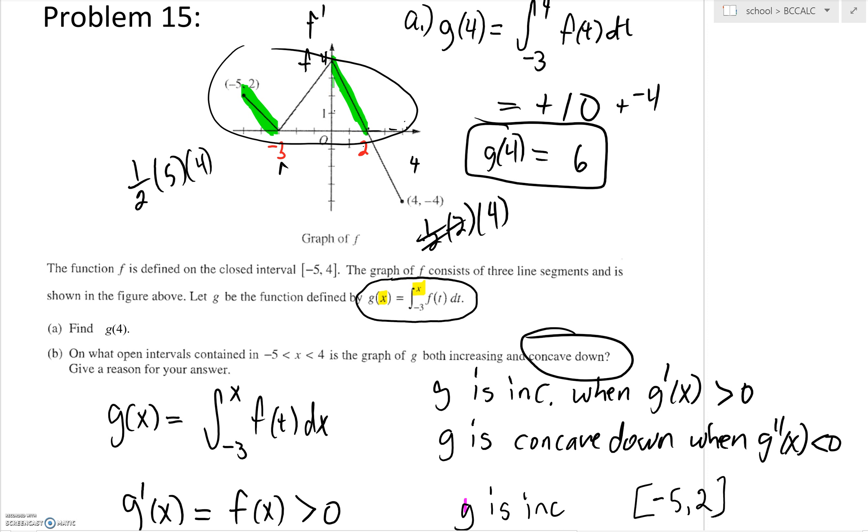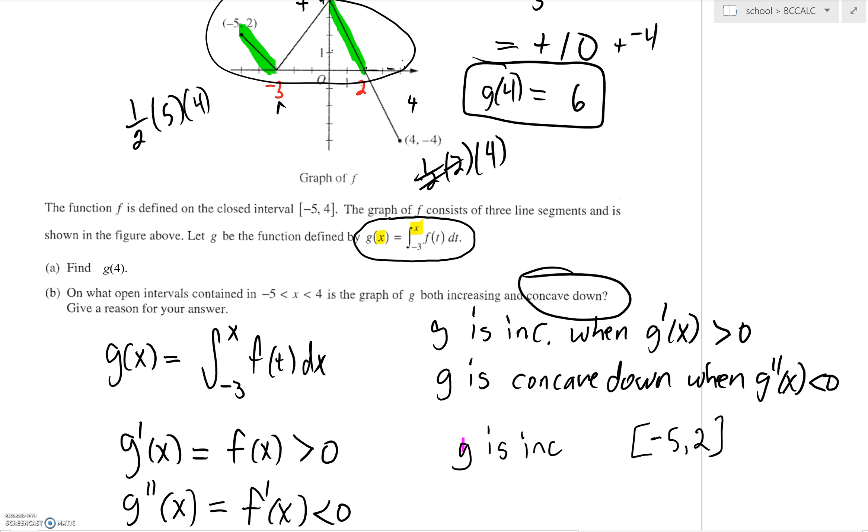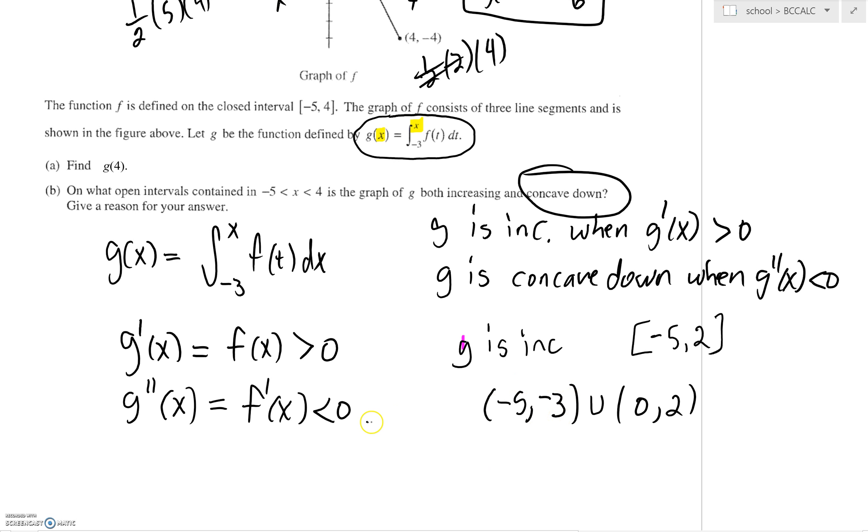For our final answer, we're going to say on the interval from negative 5 to negative 3, unioned with 0 to 2, g is increasing and concave down on this interval.